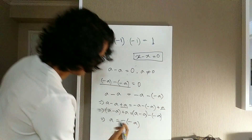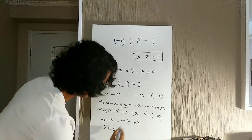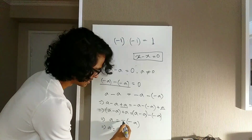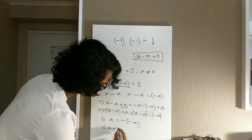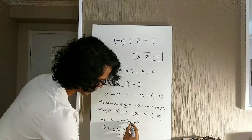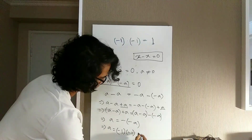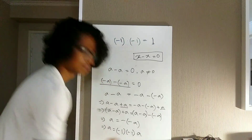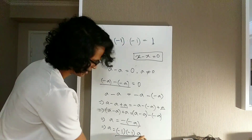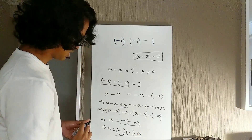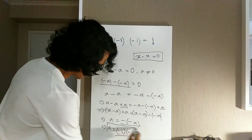Now, what does minus minus a really mean? When we see that minus, I can write it as minus one. And I can write the other minus as another minus one, and then a. So minus minus a is the same as minus one multiplied by minus one multiplied by a. We've arrived at this equation: a equals minus one times minus one times a.